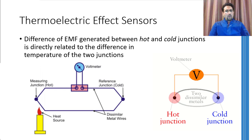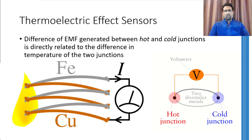Normally in practice, one hot junction and cold junction pair is not enough to produce a measurable voltage. Therefore, multiple hot junctions and cold junctions are combined together to make what is called a thermopile. Thermopiles have much more sensitivity than a simple thermocouple and hence are easier to use in practice.